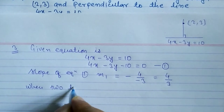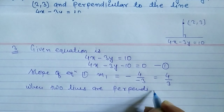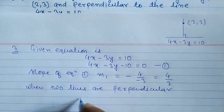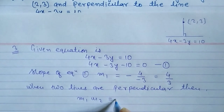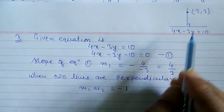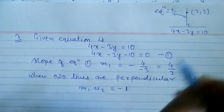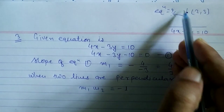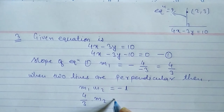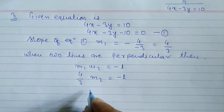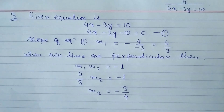When two lines are perpendicular, the product of slopes m1 times m2 equals minus 1, where m2 is the slope of the required line. So we have (4/3) times m2 equals minus 1. Cross multiplying, m2 equals minus 3 by 4.